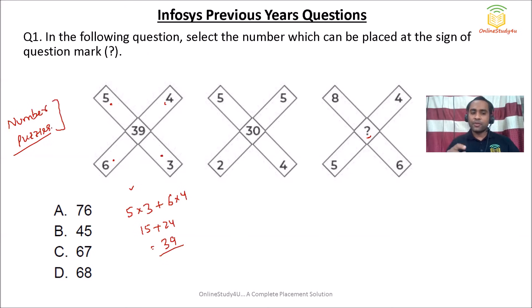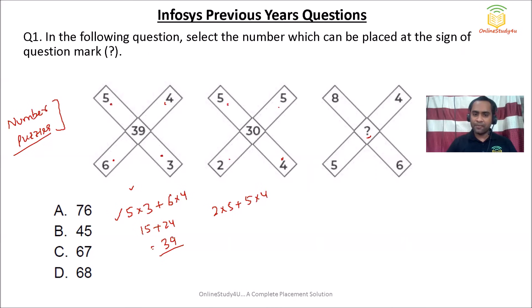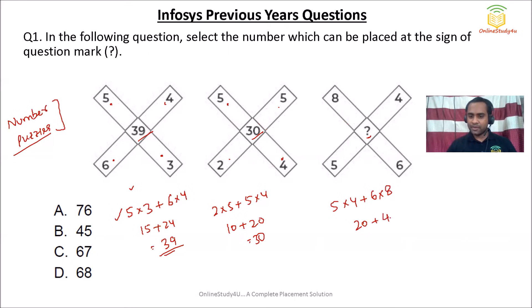For number puzzles, you might have more than one logic for a particular question, so if somebody finds a different logic, that is fine — there can be multiple logics for one question. Here you multiply 2 into 5 and then 5 into 4: so diagonal numbers 5, 4, 2, 5 give 10 plus 20, which is 30 — that's the median number. Similarly, 5 into 4 plus 6 into 8 gives 20 plus 48, which is 68. So the answer for this question is option D, 68.